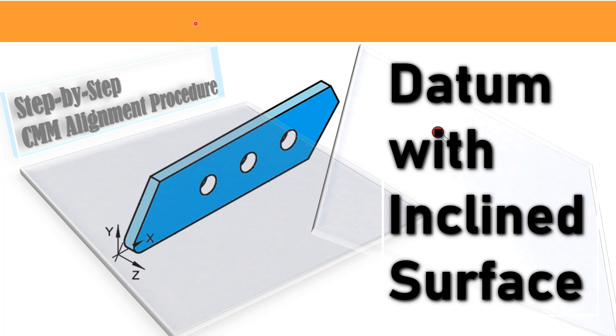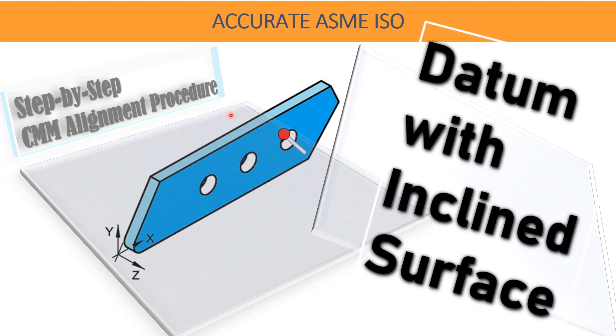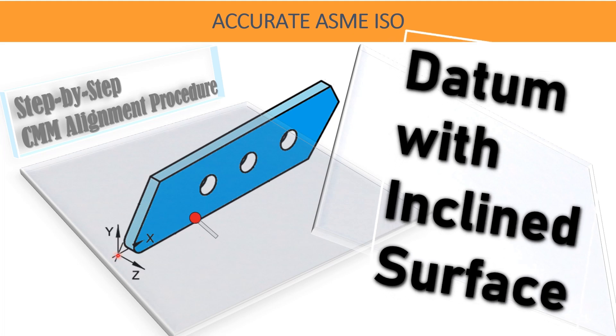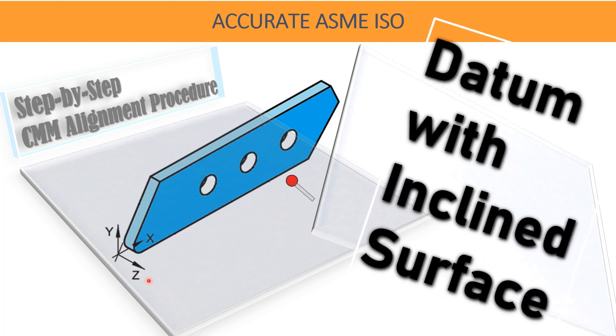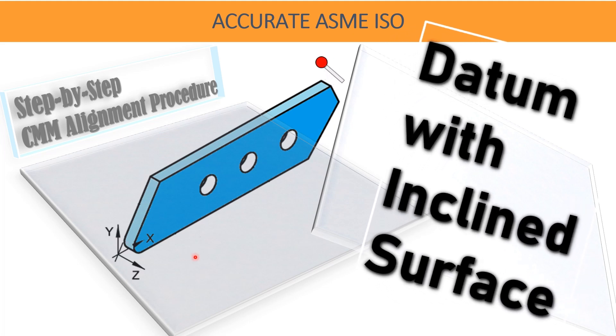Welcome to our YouTube learning channel, Accurate ASME ISO. This video is going to explain how to set a datuming system or create a part coordinate system or alignment when one of the datums are not at exactly 90 degrees but at some angle or inclined at certain degrees.